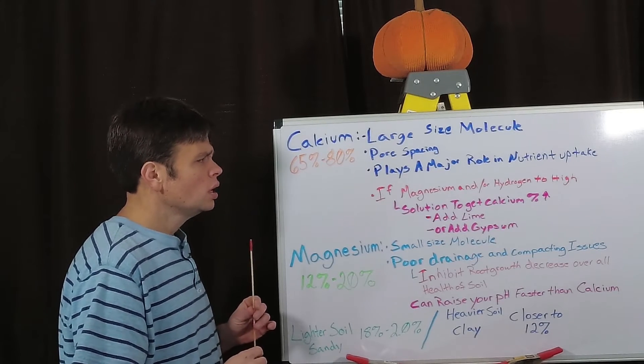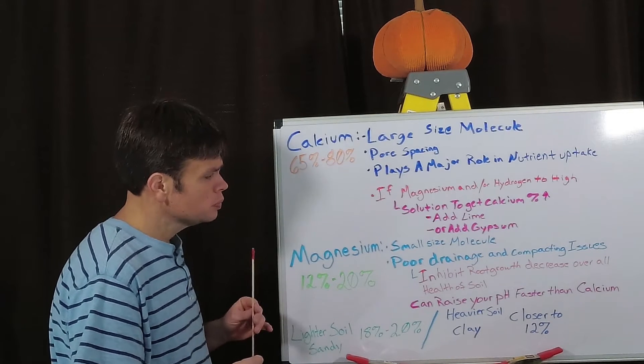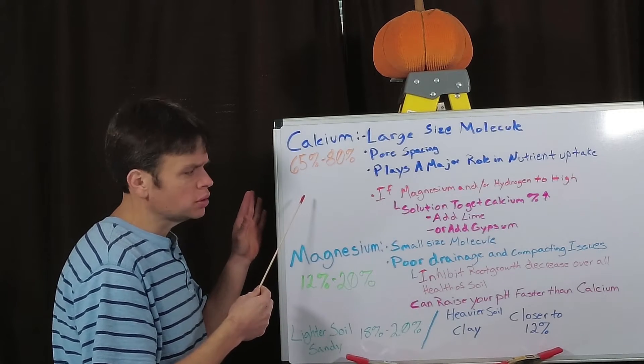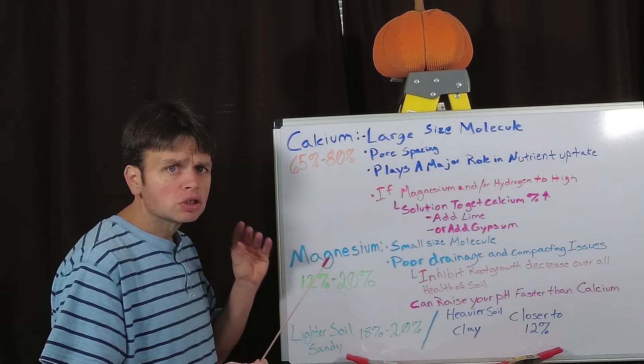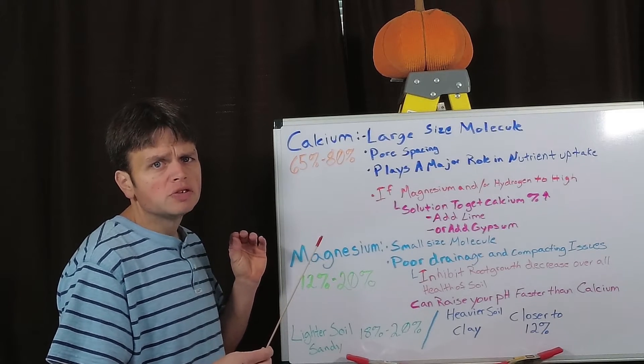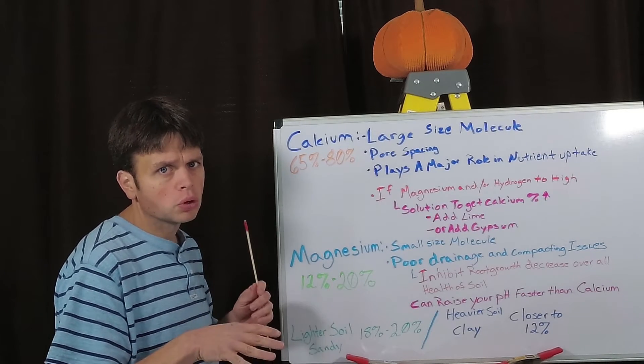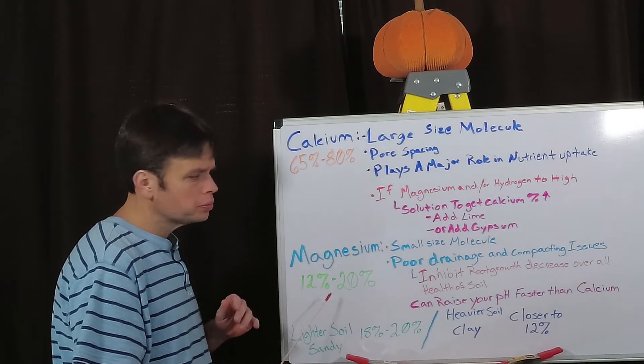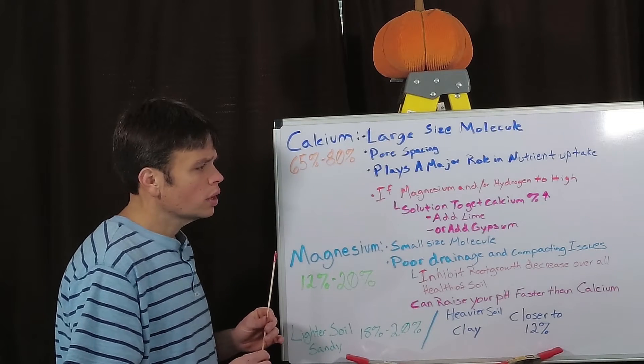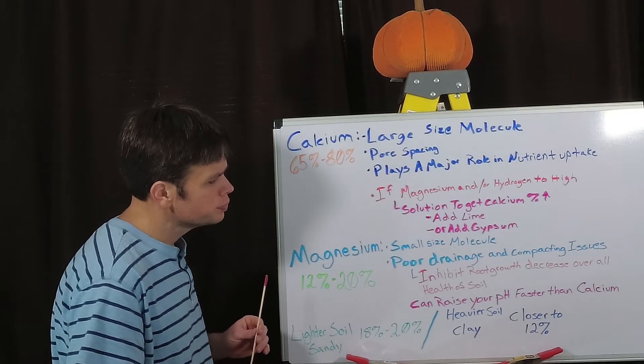So speaking of magnesium, let's jump right down to magnesium. Magnesium is the opposite of what calcium is. Its molecules are smaller which gives you poor drainage and compacts your soil more so. So if your percentage is above 20 percent and you're having poor drainage in your soil, it's because of magnesium.